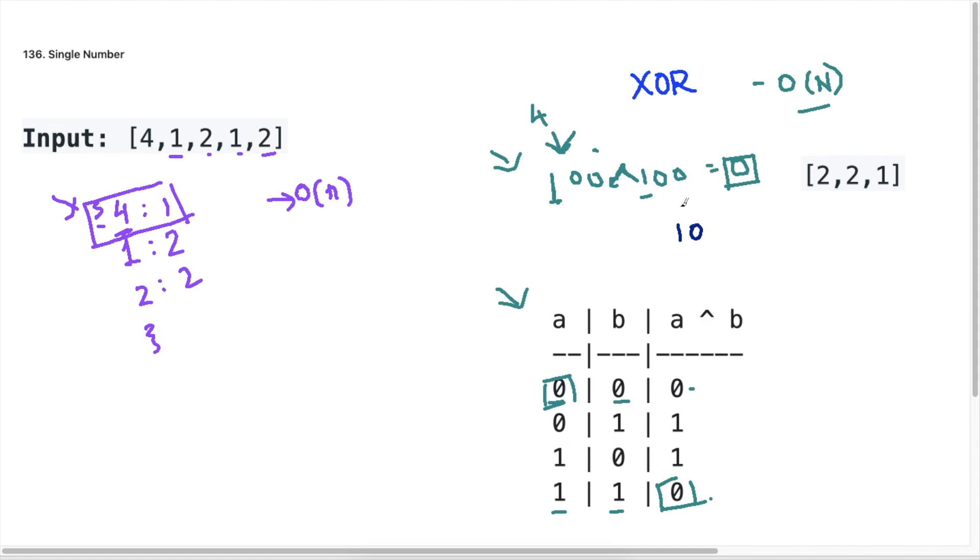And if we XOR by 2, we get a 0. And if we keep XORing by 1, 0 XOR 1, you can see here, 0 XOR 1 will give you 1. So that's how we know which one is not cancelled out. Like which element in our number in our list is not cancelled out.